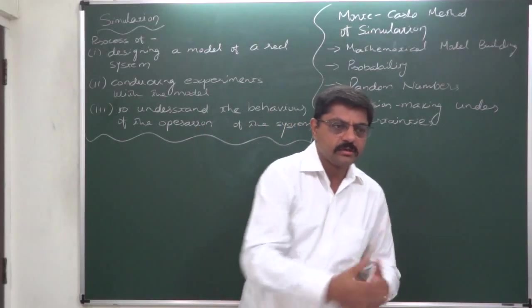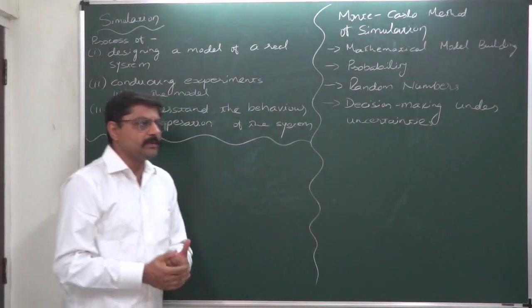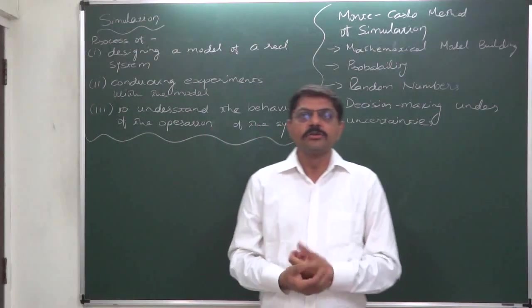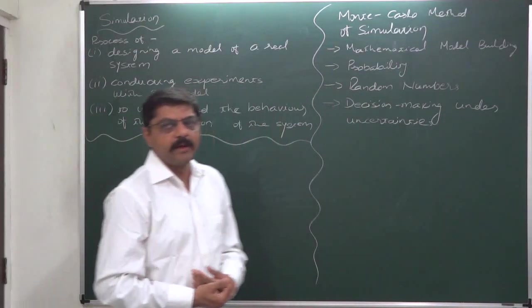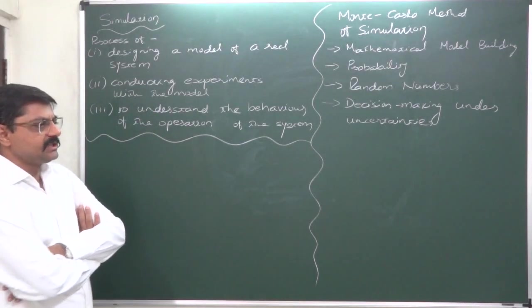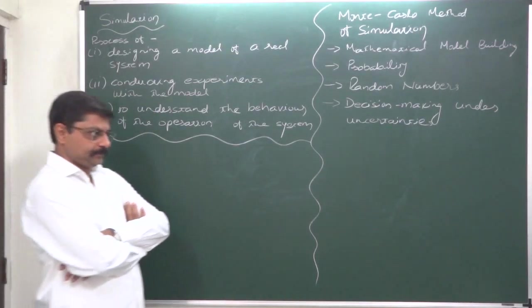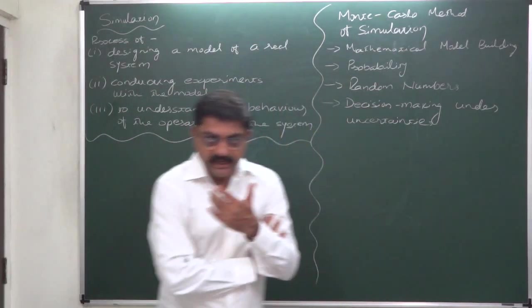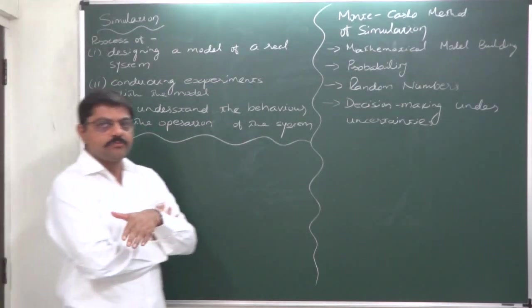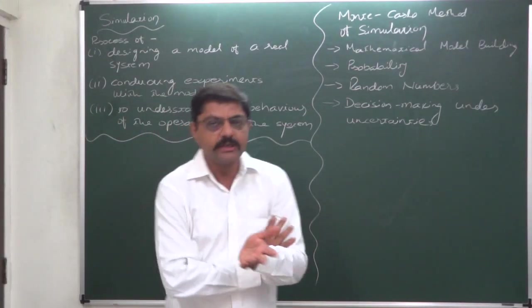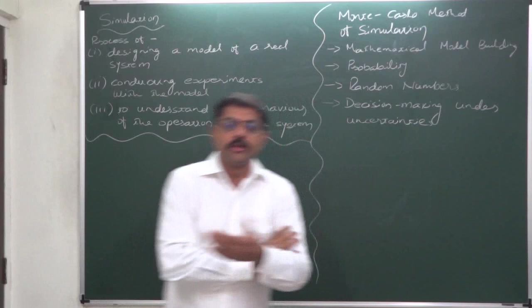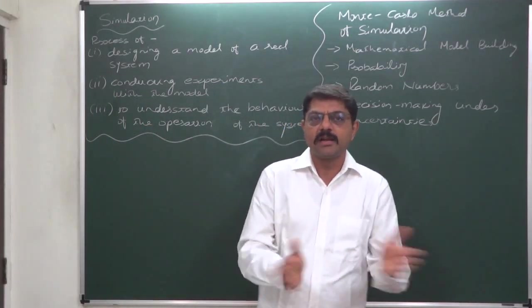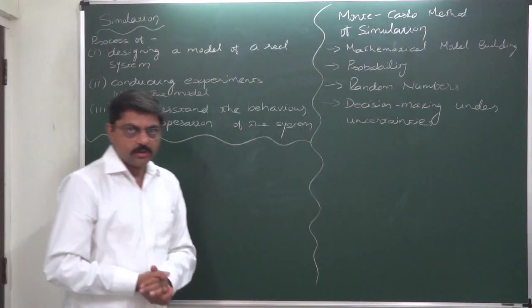If we reach the stage of cumulative probability distribution, then we can use random numbers. The steps in Monte Carlo method are: first, collecting past data; second, presenting the data in frequency distribution, then probability distribution, then cumulative probability distribution; and then determining random number classes or intervals.